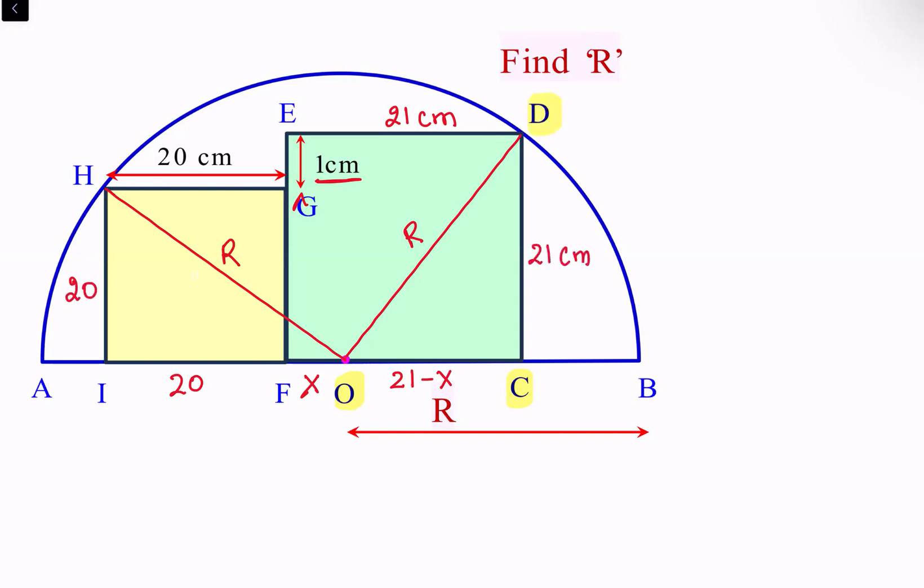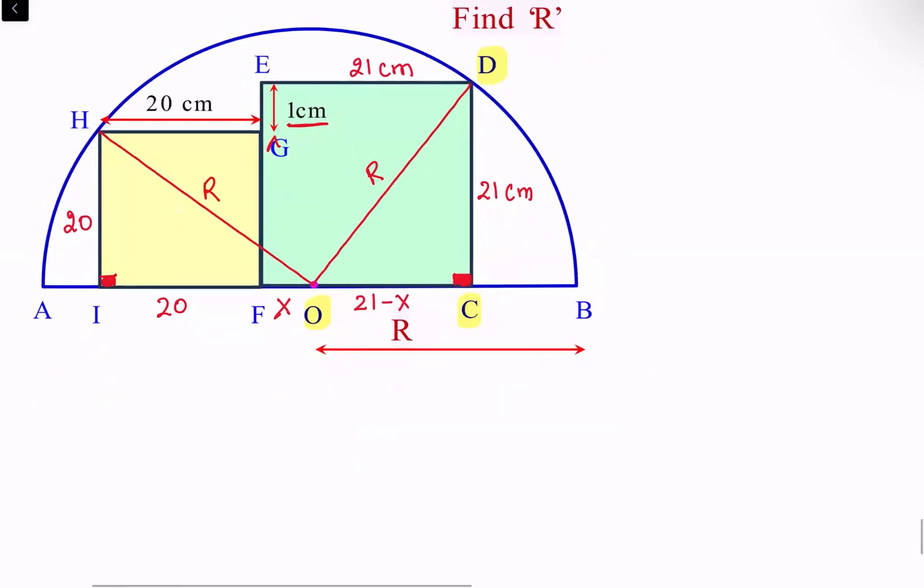So now we have got two right angle triangles. And we'll apply Pythagoras theorem in same. So let's take in triangle O C D we are applying Pythagoras theorem.